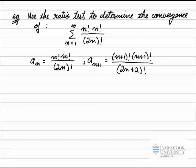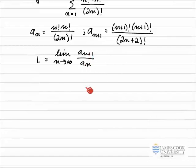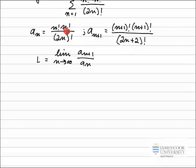So we need to look at the ratio between aₙ₊₁ and aₙ. The ratio test states that L equals the limit as n approaches infinity of aₙ₊₁ divided by aₙ. So we substitute aₙ₊₁ and aₙ into our limit. We know aₙ₊₁ is a fraction divided by aₙ, which is also a fraction, so we take the top fraction and multiply it by the reciprocal of the second fraction.